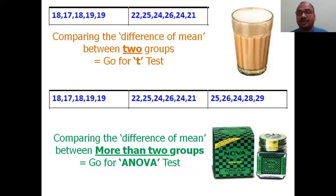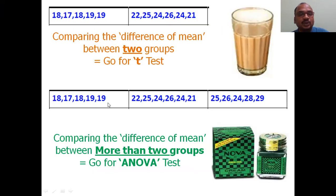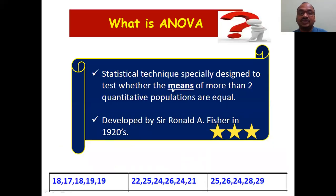When you are calculating variability within only two groups, then you go for the t-test. When comparing the difference of means between more than two groups — group one, group two, group three — then you go for the ANOVA test. That is how you select between t-test and ANOVA. ANOVA, Analysis of Variance, compulsorily requires more than two quantitative groups.